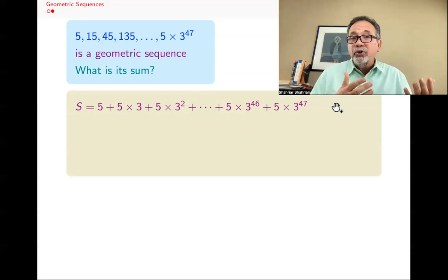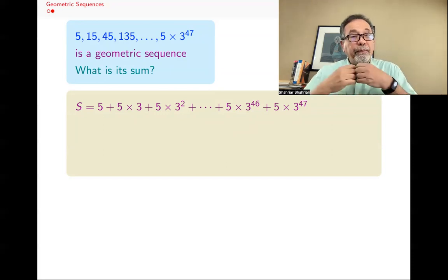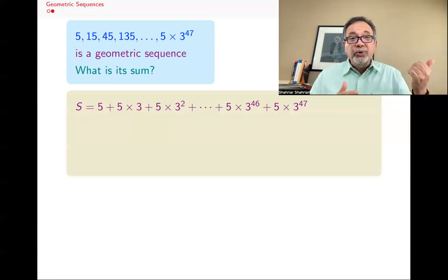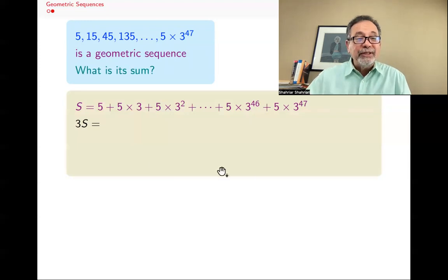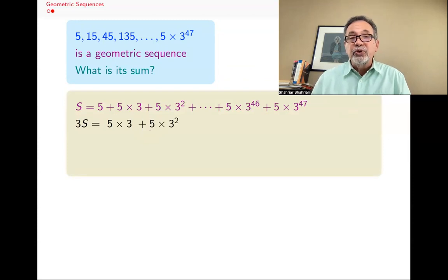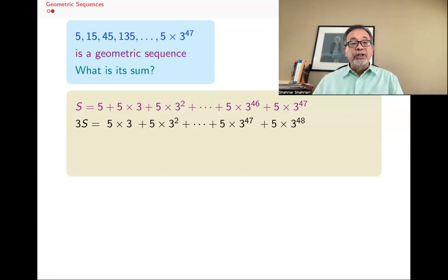And again, this time, we do the same trick we did before. You multiply by something and subtract. What do I multiply by? Not 2S, but I multiply by 3, because 3 is the common ratio. So I find 3 times S. And what's 3 times S? Well, what's 5×3? It becomes 5×3. Then becomes 5×3^2, the next term, and so forth, all the way till 5×3^48.